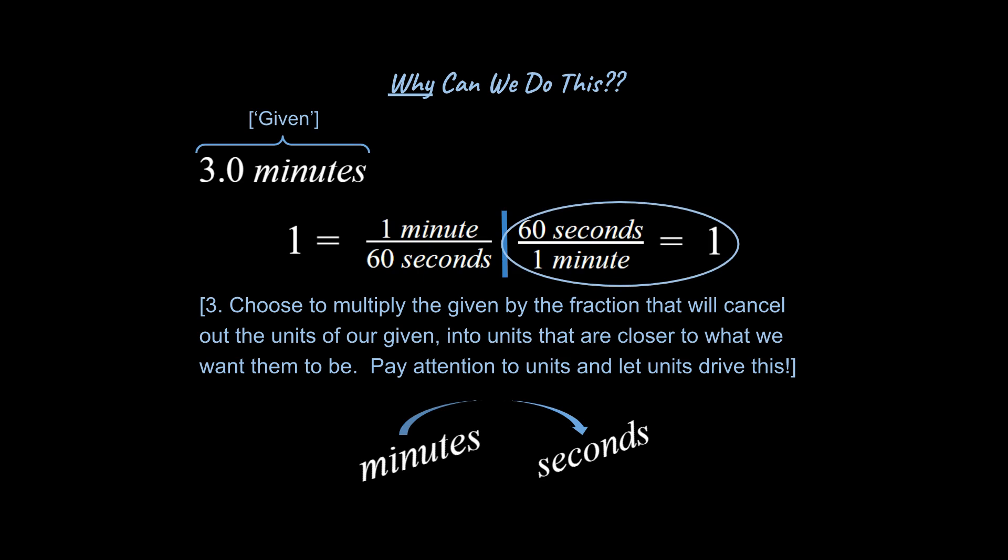Hopefully you're able to come up with the idea that we would use the fraction on the right. And the reason is because we need to cancel out the minutes as if they are an algebraic thing that needs canceling because like 3 over 3 is 1, 5 over 5 is 1, and minutes as a unit, as an algebraic unit over minutes, is also equal to 1.